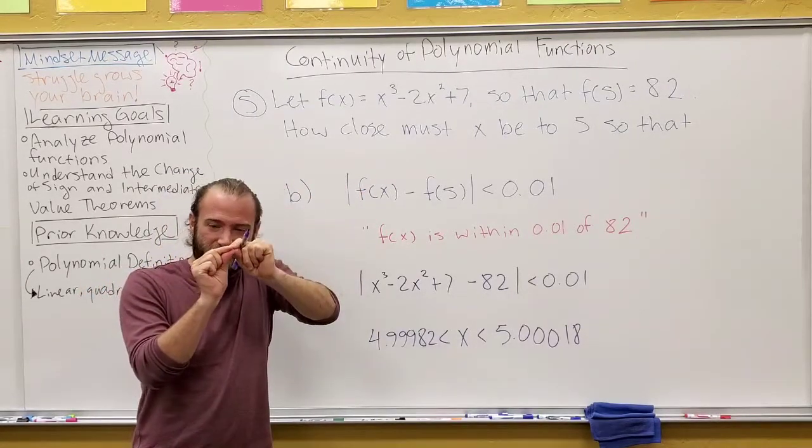And I set you up to understand this in the last example so we didn't have to get all crazy about it. Remember, this is saying we're trying to make f of x within 0.1 of 82. So this is kind of a complex thing with a lot of symbols going on, but really the main question we're asking is, how can I make f of x be within 0.1 of this output? How close do I need to make the input to 5 to make that happen?